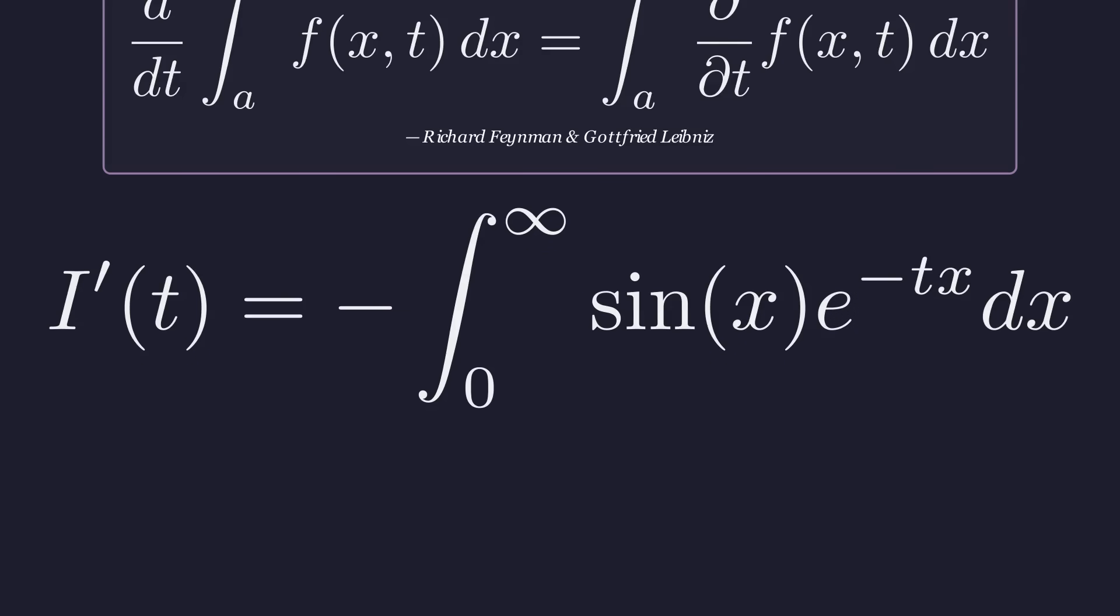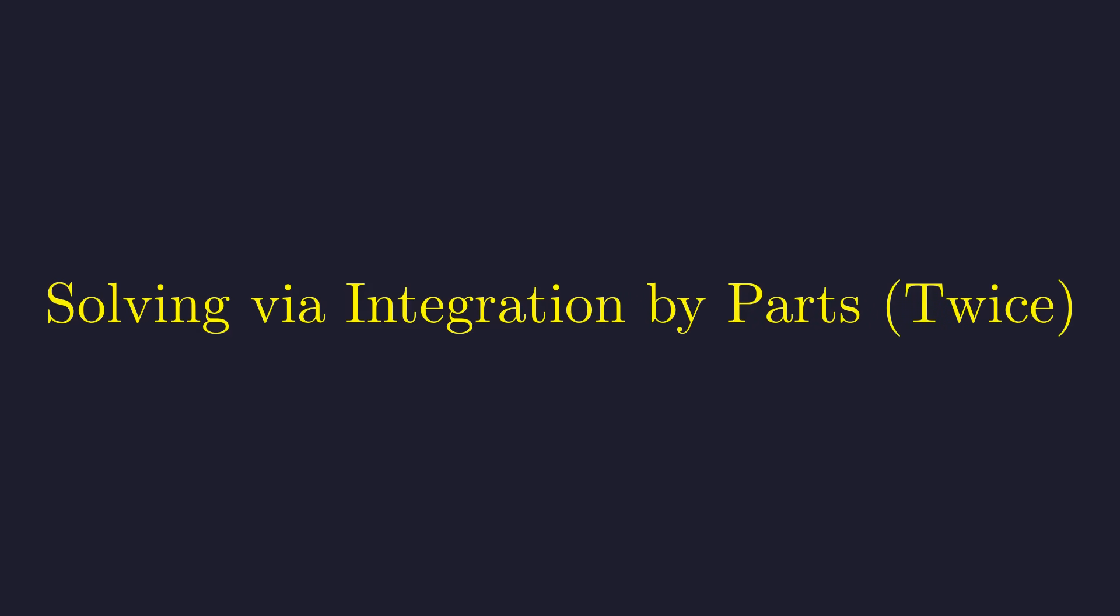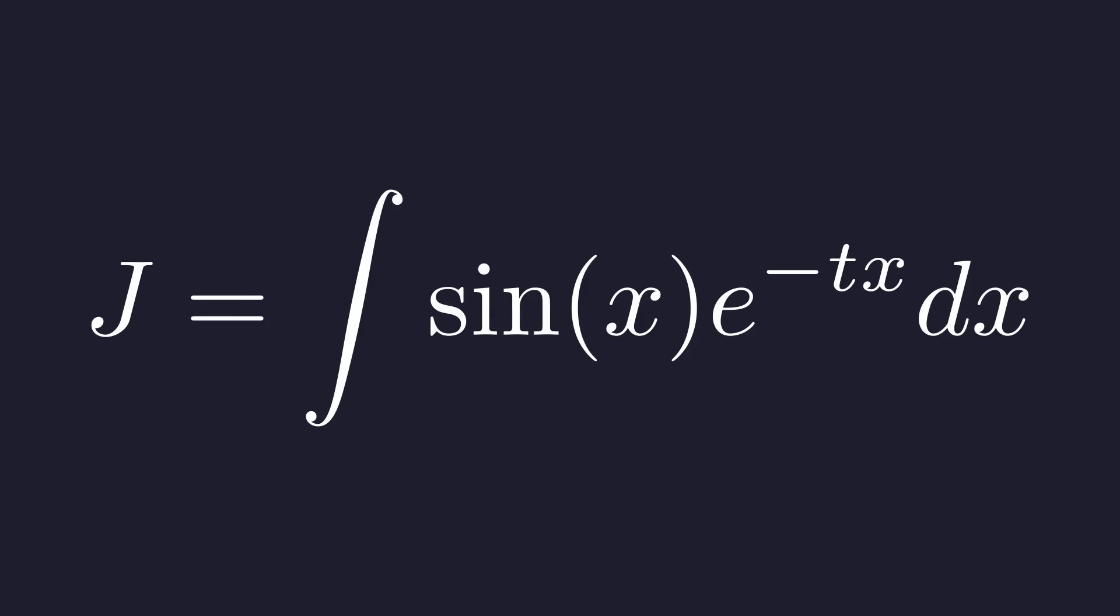I prime of t is equal to the negative integral from zero to infinity of sine of x times e to the power of negative t times x. This is a classic integral that requires integration by parts, twice. Let's call the indefinite integral j. We'll solve the indefinite integral first, and then apply the limits.